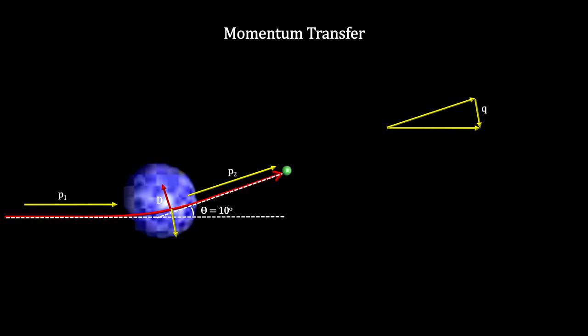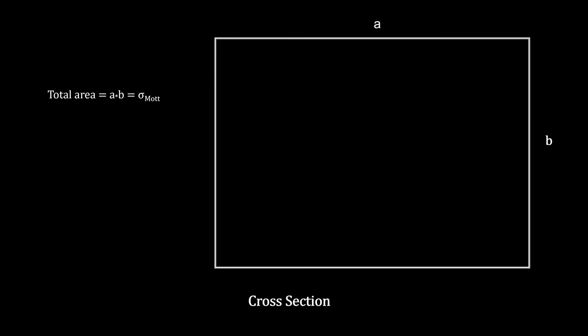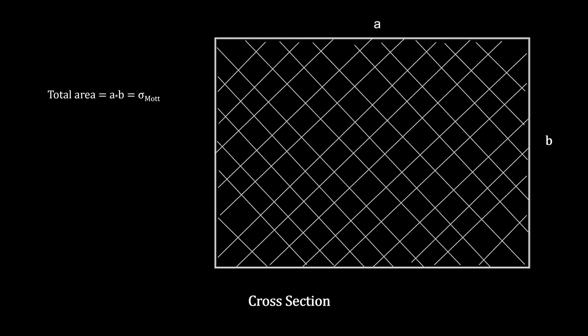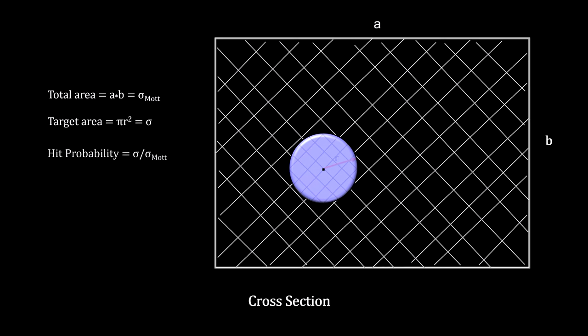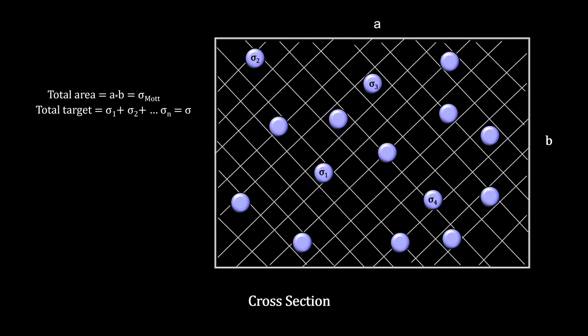This gives rise to the concept of cross-section. If we take a look at the total area we are shooting into, and the smaller area that represents the target, we see that the probability of a hit is equal to the target size divided by the total area. You can see that as the target cross-section shrinks, the probability of a hit goes down. Of course, we have a large number of targets in the area, the liquid hydrogen protons. So we add them together to get the total cross-section.